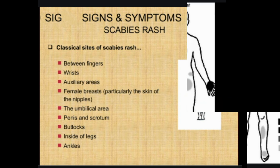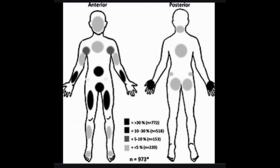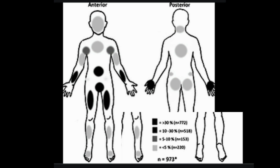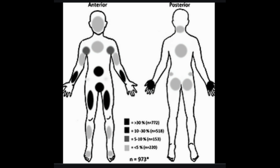Common sites for scabies in older children and adults include the wrist, elbow, armpit, nipple, penis, waist, buttocks, and the area between the fingers. In babies, toddlers, and sometimes the very elderly or immunocompromised, scabies can also include the head, face, neck, hands, and soles of the feet. The rash itself can consist of tiny bites, hives, bumps under the skin, or pimple-like bumps. The burrow tracks of the mite may appear as tiny raised or discolored lines.